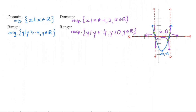On the reciprocal graph, the domain includes every value of x except at the asymptotes. So x is an element of the real numbers, except x cannot be negative 1 or 3. For the range, the graph continues down to negative infinity; the reciprocal vertex is at negative 1/4, so we have y less than or equal to negative 1/4. Then, because the pieces approach the horizontal asymptote, we also have every value of y greater than 0. Make sure you do not include equal to zero — y cannot equal 0, that's where the asymptote lies. So y is greater than 0, and y is a real number.